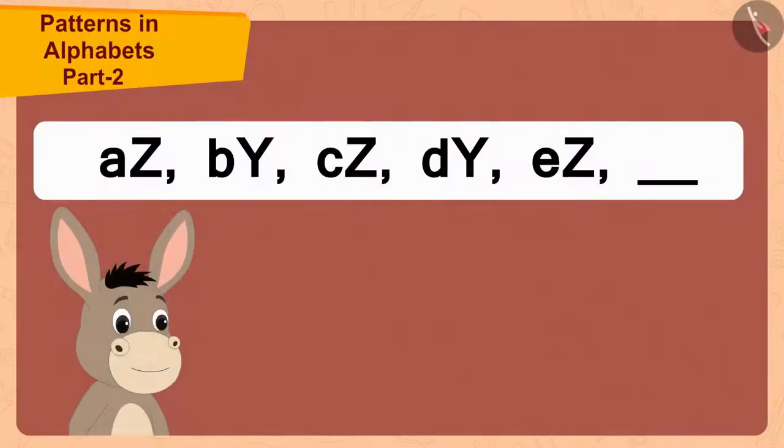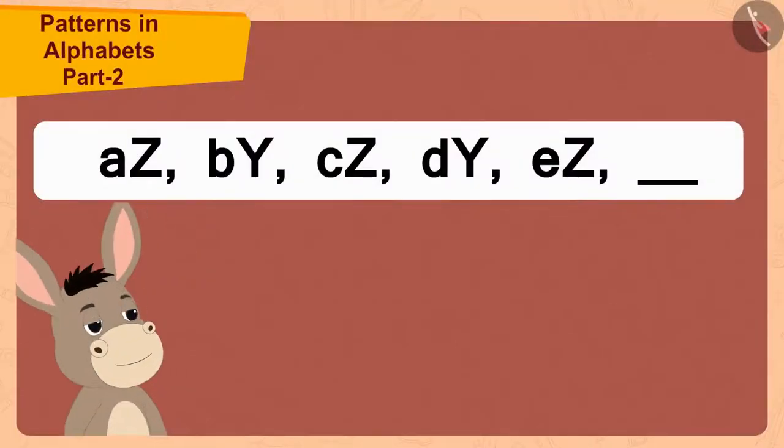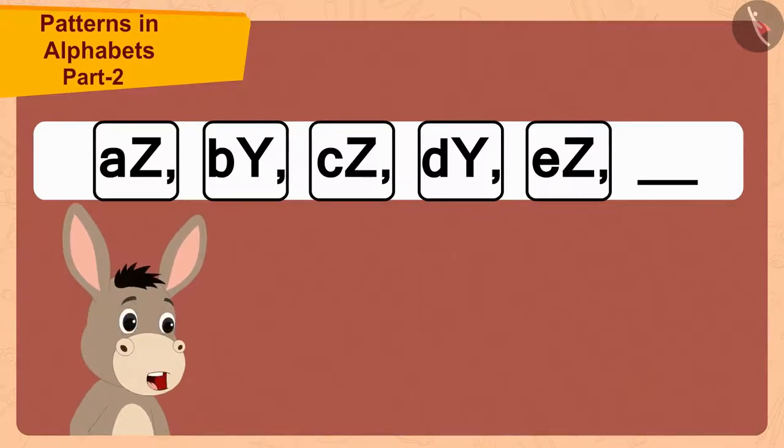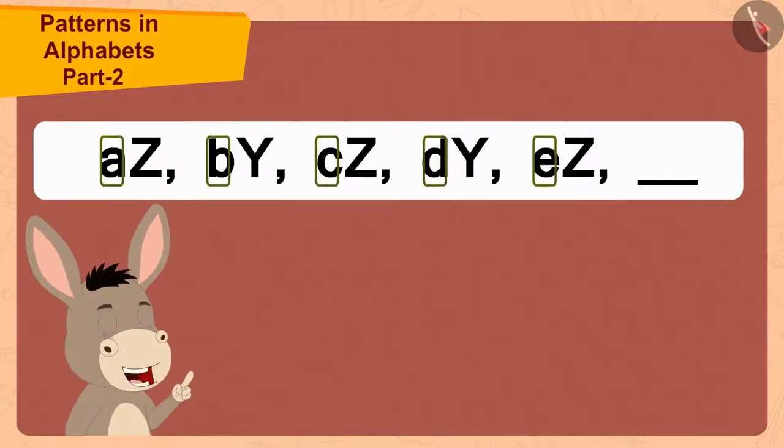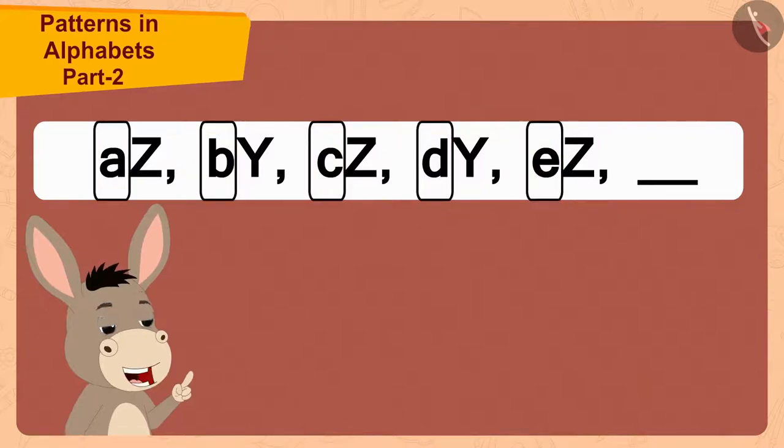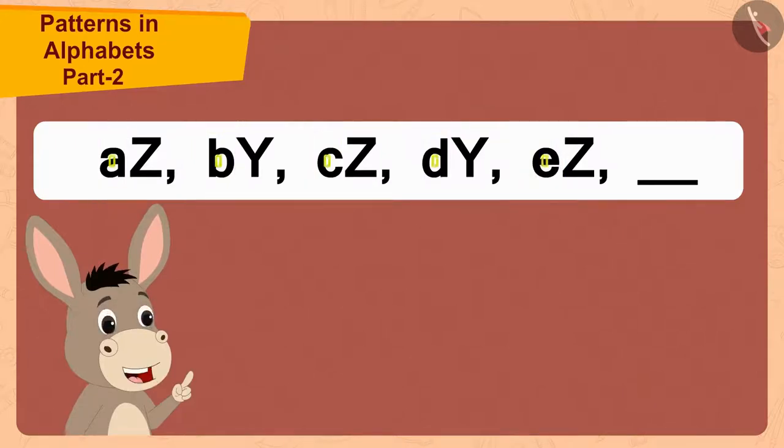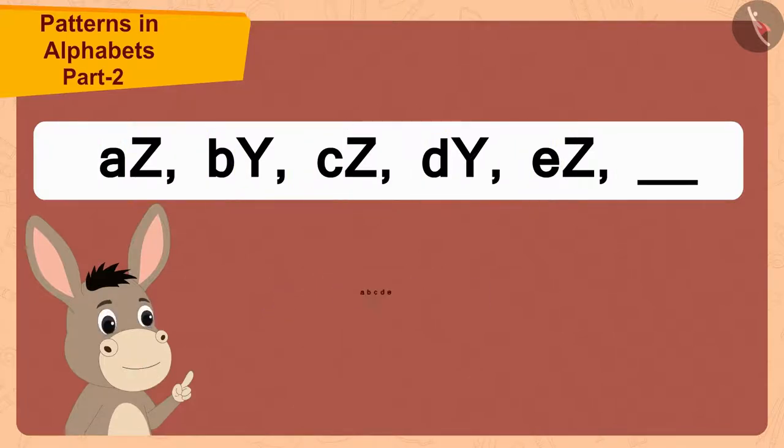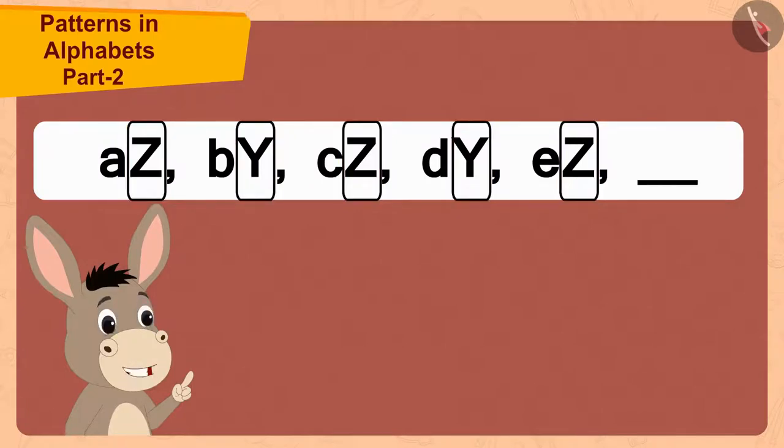Bola then looked at the pattern more closely. Here two letter pairs are made. Let me look at the small letters first. The small letters are increasing in order. And the capital letters? Let me repeat these two letters. Z, Y, Z, Y are repeatedly visible in capital letters.